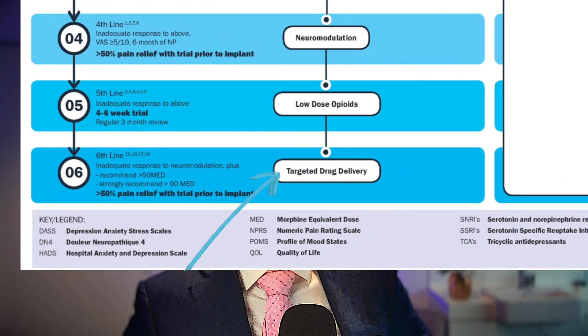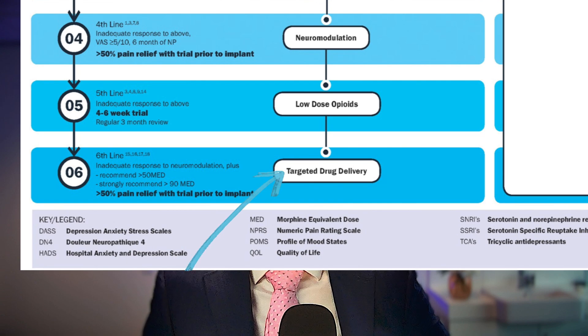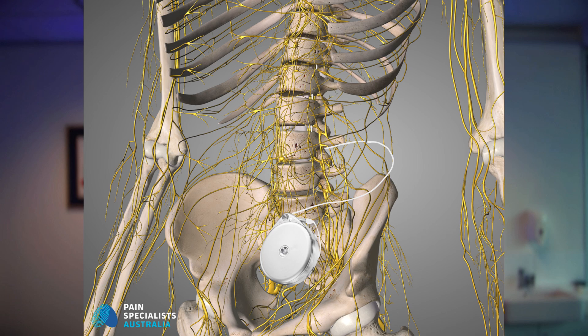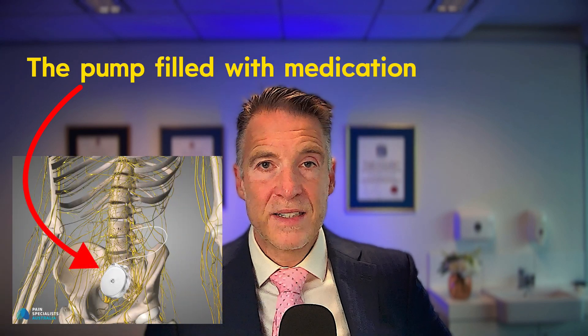Step six: if all this fails, we can use targeted drug delivery. This is where we use things like morphine pumps or local anaesthetic pumps, where we apply the therapy directly to the spinal cord space — the cerebrospinal fluid — through a catheter connected to what we call a little drum. The drum is filled with medications and we control the delivery into the spinal fluid. Targeted drug delivery is not without its risks, but it can be life-changing if used for the correct person for the correct pain.